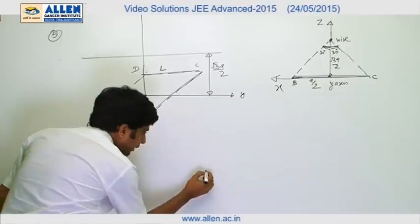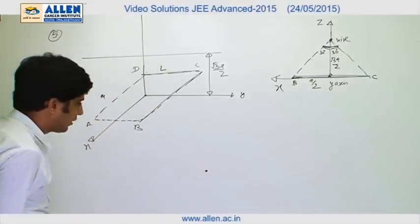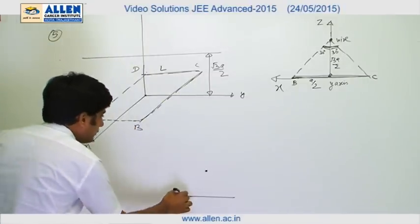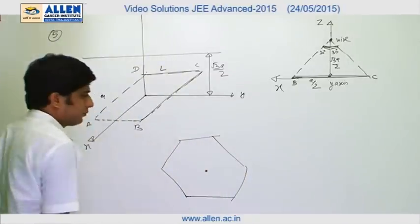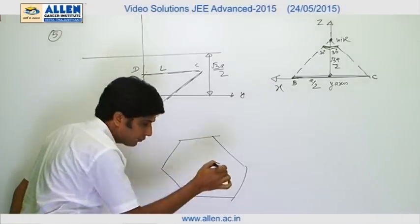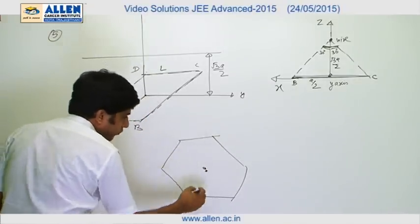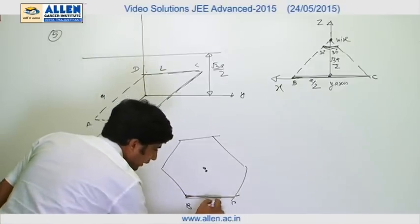And in three-dimensional diagram, it will be hexagonal prism, and this is the wire. Now if flux through one phase, this is BC, is phi, we can say that the complete flux through all 6 phases will be given by 6 phi.